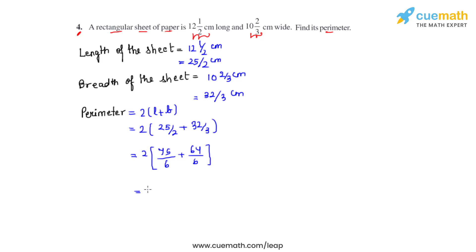So now we can take the common denominator as 6 and add just the numerator. So adding it will give us 139 divided by 6. So 2 times 1 is 2, 2 times 3 is 6 and if we divide it and convert it into a mixed fraction we'll get the answer as 46⅓ centimeter and this is the perimeter of the rectangular shape of paper.